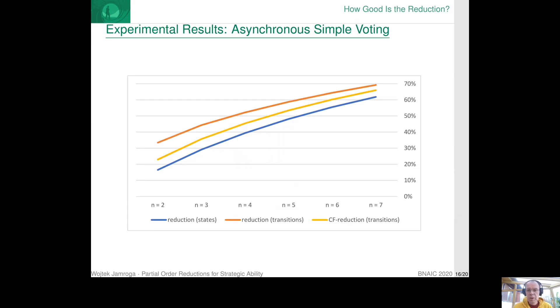We have also conducted some more systematic experiments for a number of benchmarks. So this is the pattern of reduction results that we got for the coercion and voting models. You can see that, for example, for N equal to seven voters, the reduction obtains almost triple reduction of the state space and almost quadruple reduction of the transition space, which is, of course, very good news.